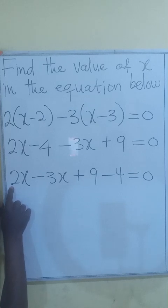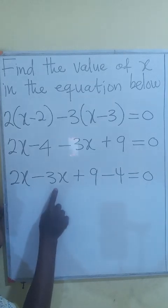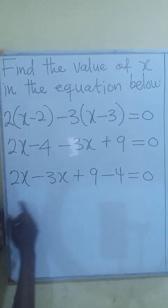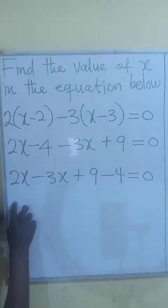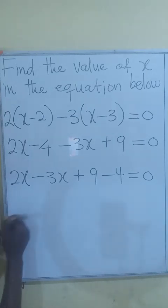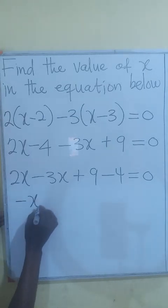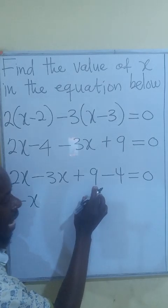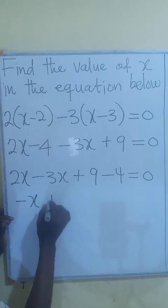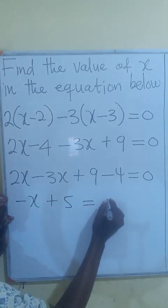So now this is going to be 2 minus 3. We know 2 is less than 3. So if you subtract 3 from 2, you will be left with 1. That becomes a negative. So negative x. Of course, we have a negative 1x. But we don't write 1 in front of a variable. So this becomes negative x. Then this is 9 minus 4. That will give us 5. So positive 5 equals 0.